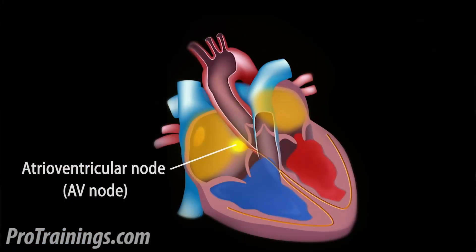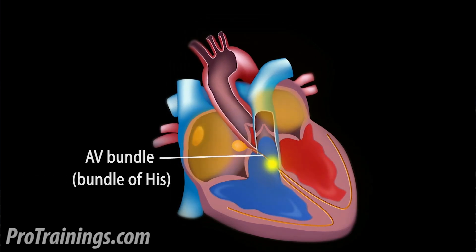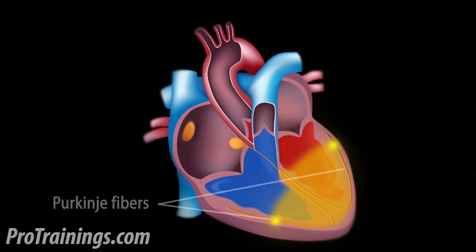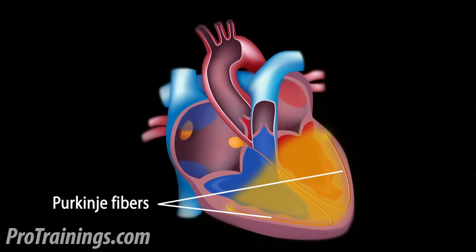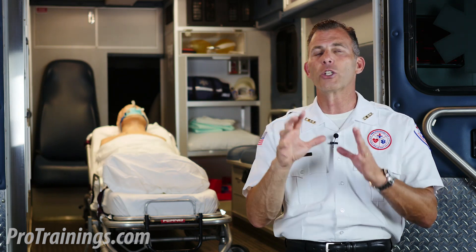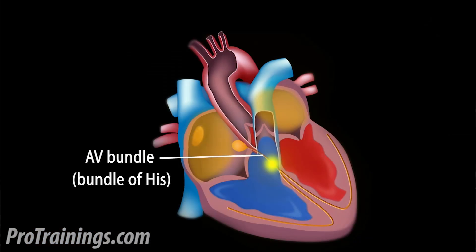The impulse generated from the AV node travels through the bundle of His, which is the route the impulse takes to reach the Purkinje fibers that wrap around the ventricles. This ventricular contraction then circulates the majority of oxygenated blood throughout the body. The bundle of His is the route of electrical transmission between the atria and the ventricles.